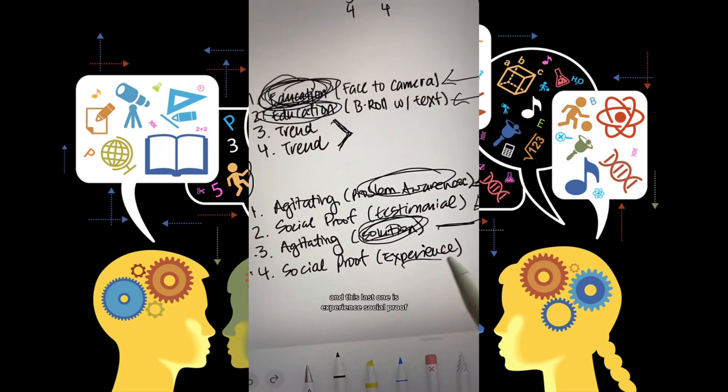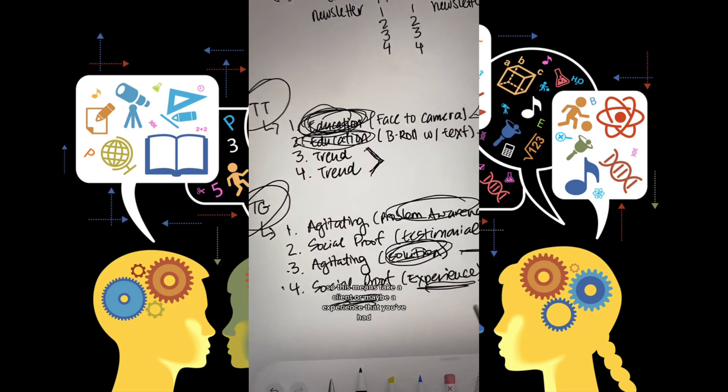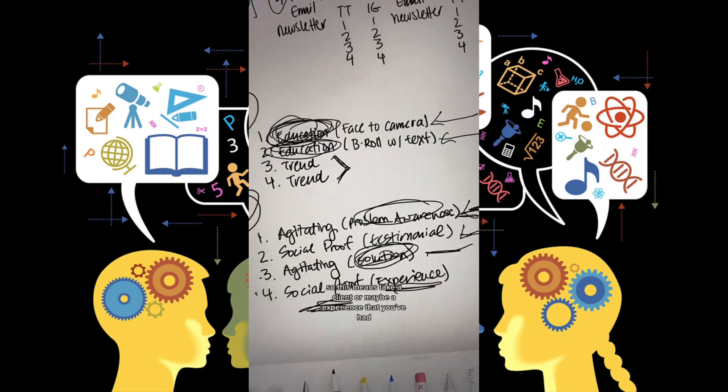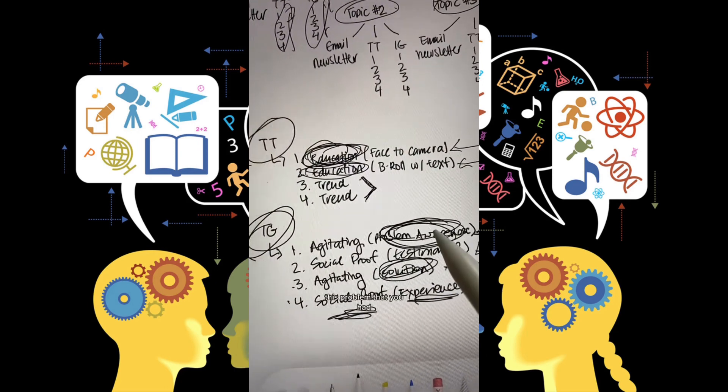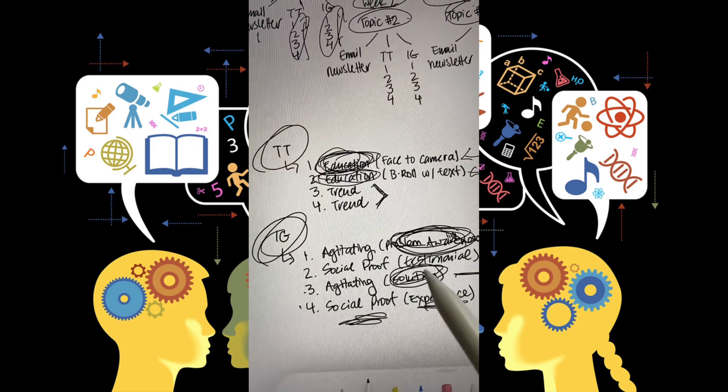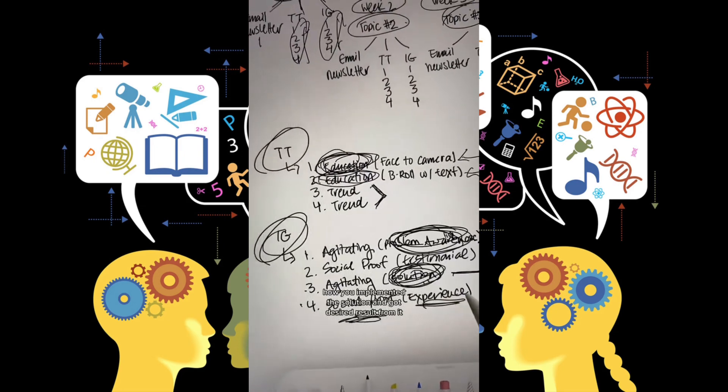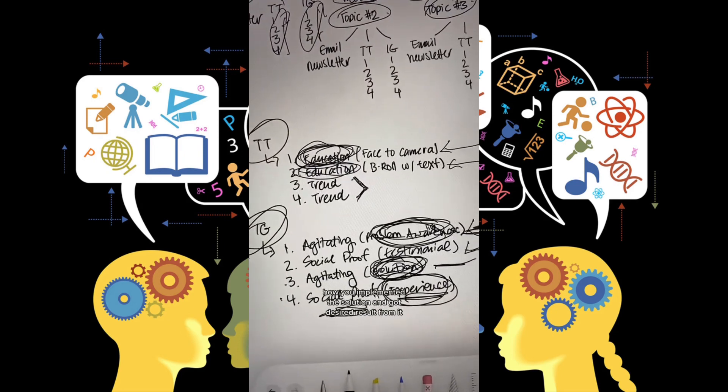And this last one is experience social proof. So this means take a client or maybe an experience that you've had, this experience, this problem that you've had, how you implemented the solution, and got desired result from it.